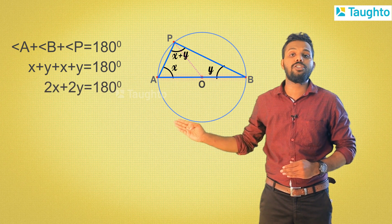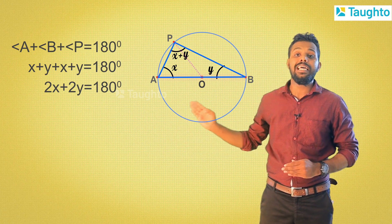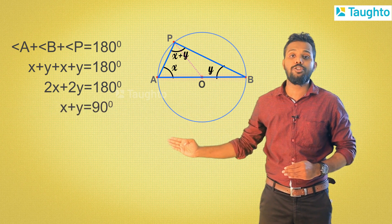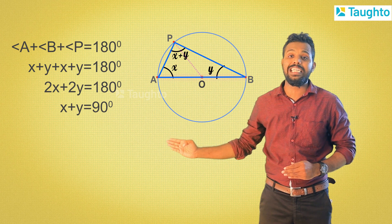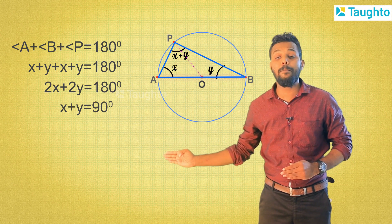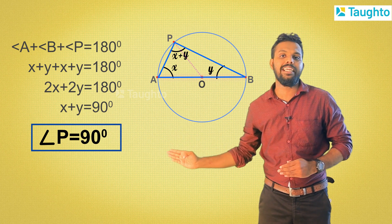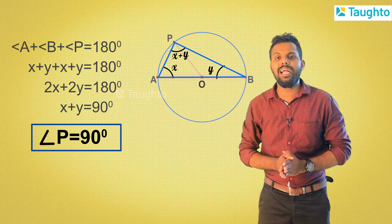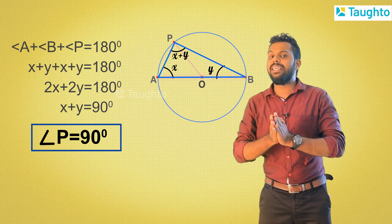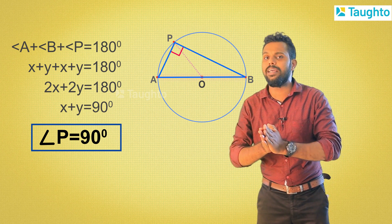2x plus 2y equals 180, then x plus y equals 180 divided by 2, which equals 90. That is angle P equals 90 degrees. So angle P is a right angle.